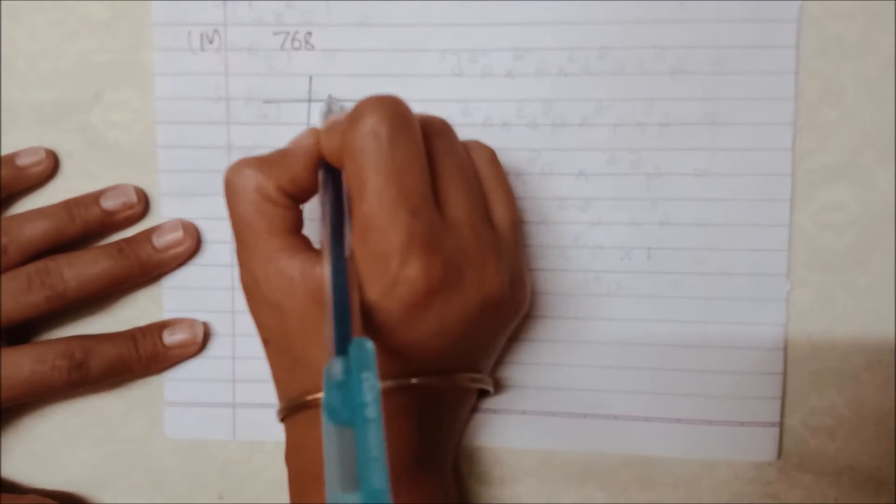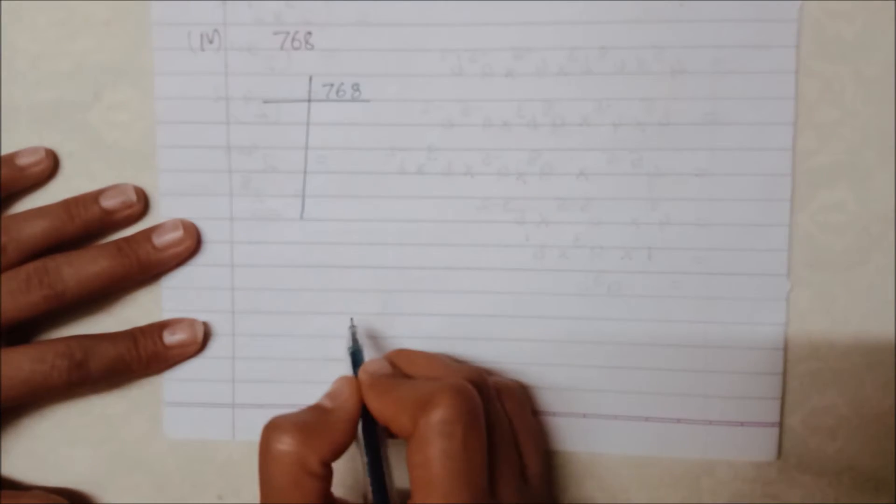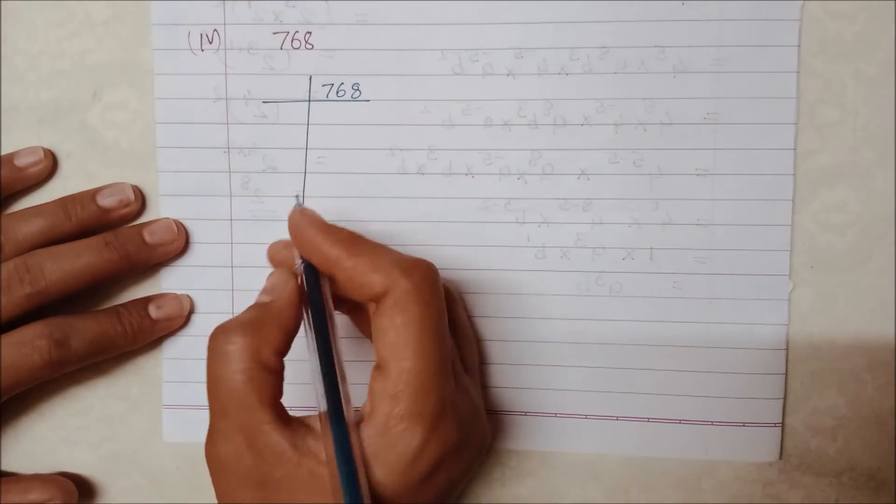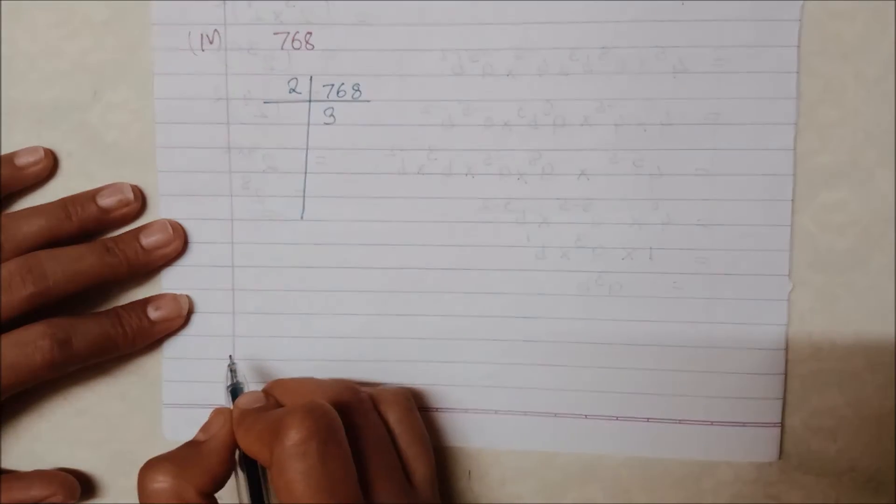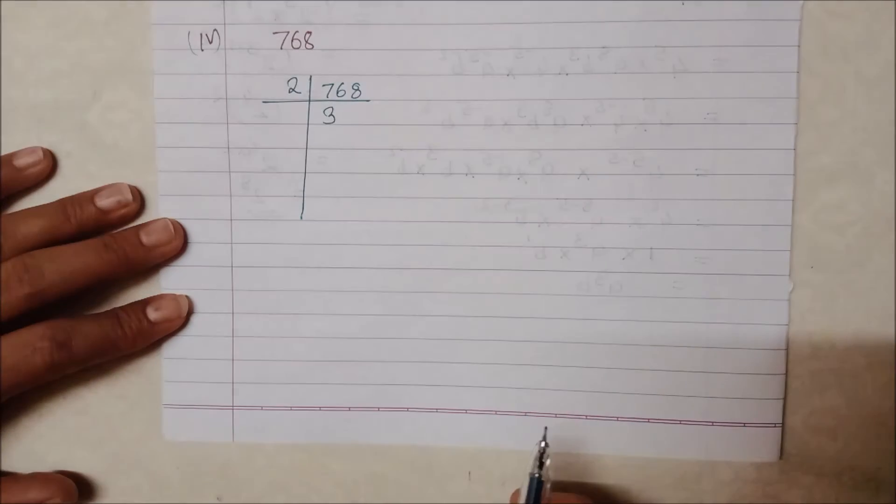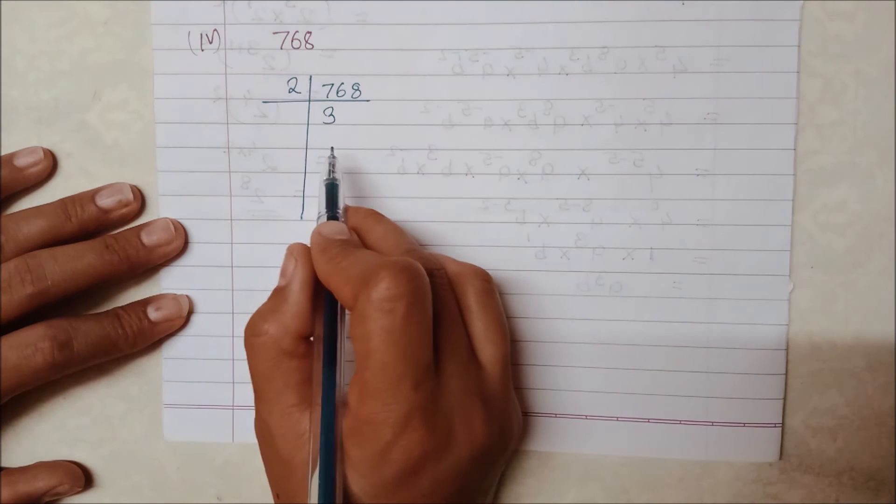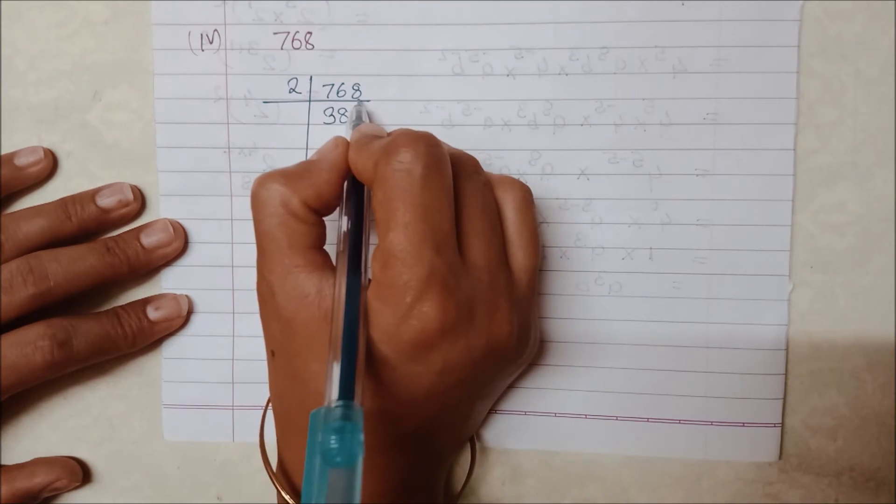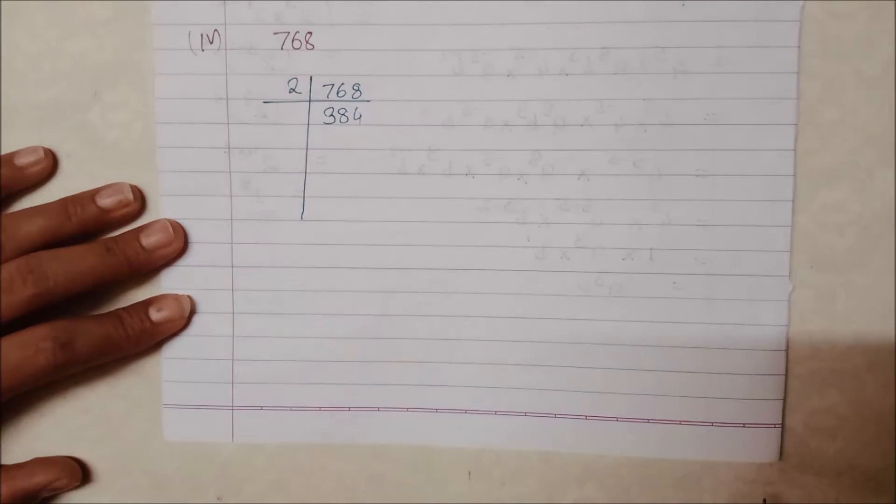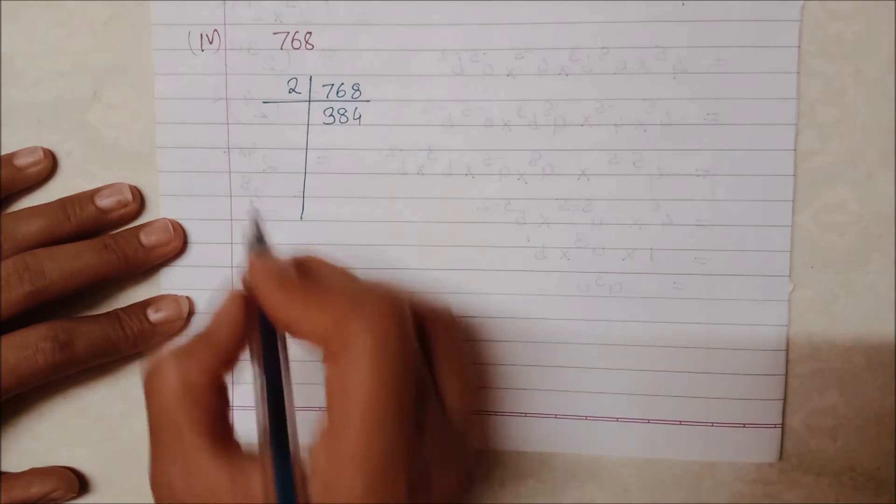First, we will remove the factors. 768 is an even number, so it will be divided by 2. We will divide by 2 to get 384, then 192, then 96, then 48, then 24. Again, we divide by 2.